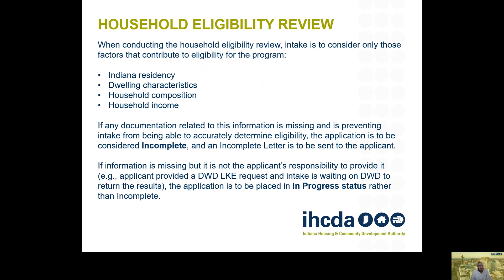Moving on to household eligibility review. When conducting the household eligibility review, intake is to consider only those factors that contribute to overall eligibility for the program: Indiana residency, dwelling characteristics, household composition, and household income. If documentation related to this information is missing and is preventing intake from accurately determining eligibility, that application is to be considered incomplete and an incomplete letter is to be sent to the applicant. If information is missing but is not the applicant's responsibility to provide — for instance, intake is waiting on DWD to return results — the application is to be placed in 'in progress' status rather than incomplete status.